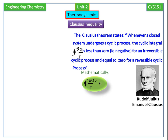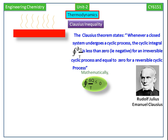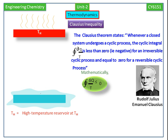It can be demonstrated with the help of two heat engines — one is a reversible heat engine and another one is an irreversible heat engine. Both are operating between a high temperature reservoir and a low temperature reservoir. This is the high temperature reservoir; its temperature is TH. This is the low temperature reservoir; its temperature is TL.